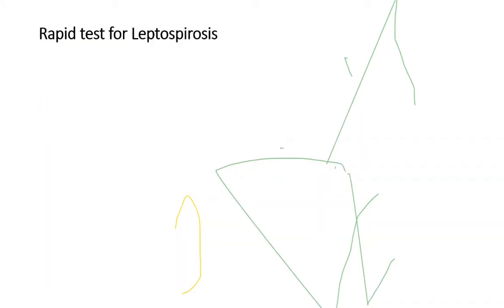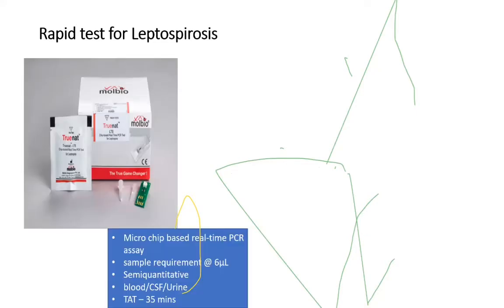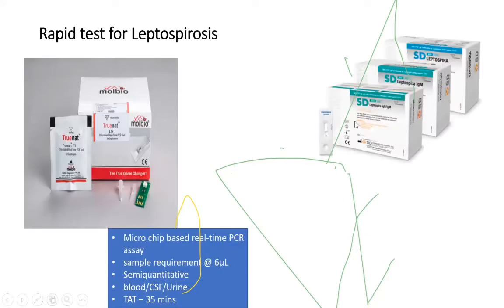Rapid tests for leptospira IgM are available in addition to ELISA. Recently introduced microchip real-time PCR-based assay for direct detection of organism in blood, CSF, and urine has a very short turnaround time and is semi-quantitative — done on TrueNAT. Because of COVID, most laboratories now have TrueNAT, so these tests can be considered.